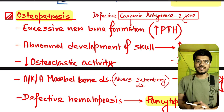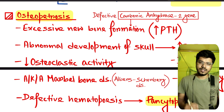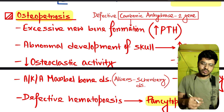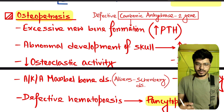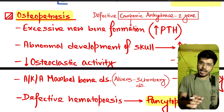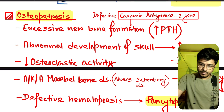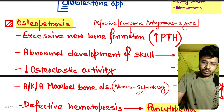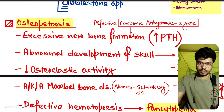In this video we talk about osteopetrosis, also called the marble bone disease. It is due to decreased osteoclastic activity, so there is abnormal bone development.